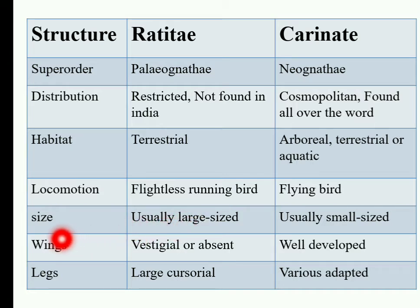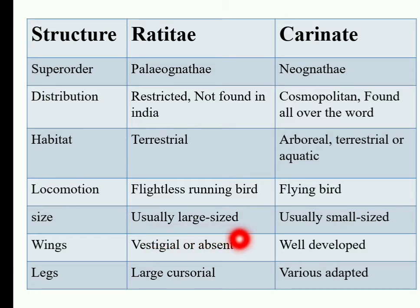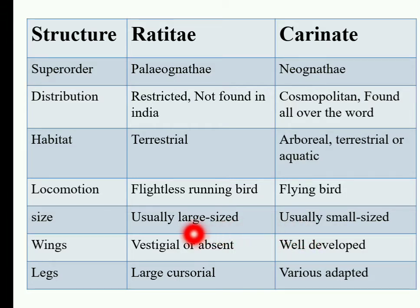Next we will discuss wings. Ratites birds have vestigial or absent wings, which are not very well developed. Carinates birds have very well developed wings.